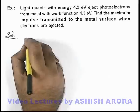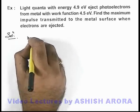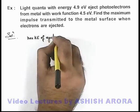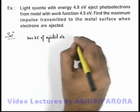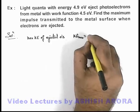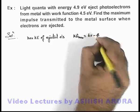So here we can easily calculate the maximum kinetic energy of ejected electrons. This can be directly given as KE max equals the incident energy h nu minus the work function.